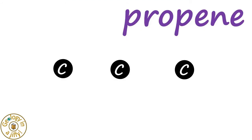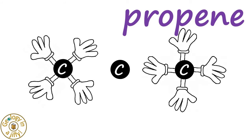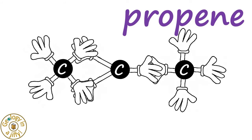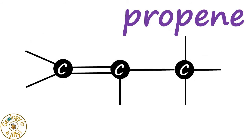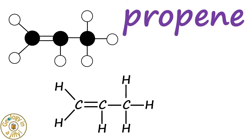With its three carbon atoms, we can start to add our friendly hands to the end atoms, then make our double bond from the middle carbon atom, then a single bond to the other carbon atom, leaving us one spare hand. When we replace the hands with bonds and add the hydrogen atoms, we then have our propene molecule of C3H6.